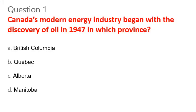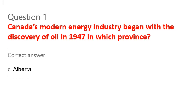Question 1. Canada's modern energy industry began with the discovery of oil in 1947 in which province? A. British Columbia. B. Quebec. C. Alberta. D. Manitoba. Correct answer: C. Alberta.